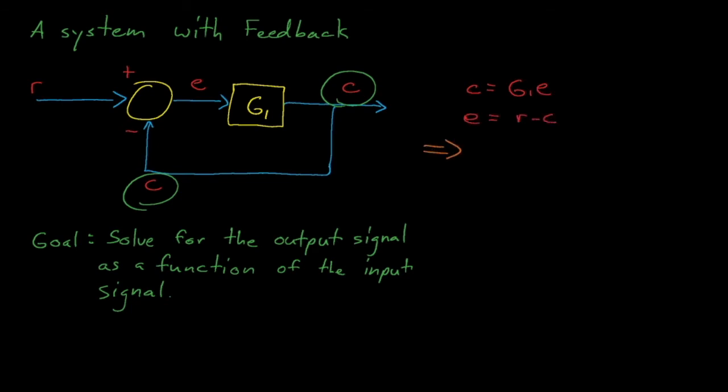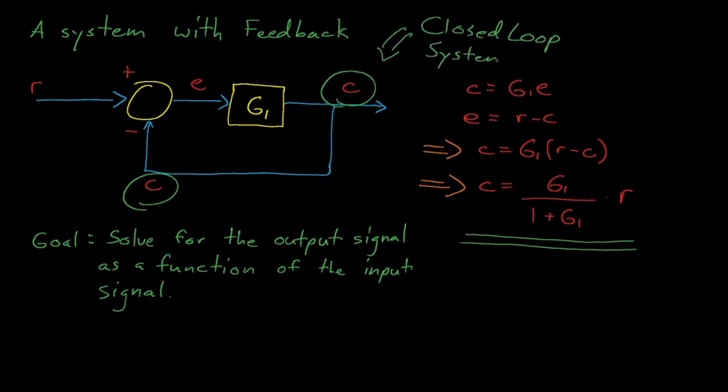From here, we can substitute in the equation for E into the first equation and then solve for C. And then we see that C is equal to G1 divided by 1 plus G1 times R.